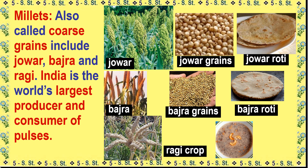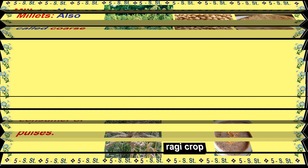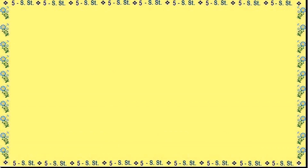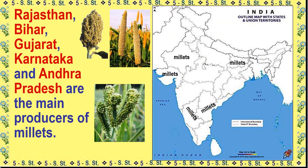Millets, also called coarse grains, include Jowar, Bajra, and Ragi. India is the world's largest producer and consumer of pulses. Rajasthan, Bihar, Gujarat, Karnataka, and Andhra Pradesh are the main producers of millets.